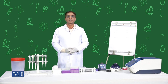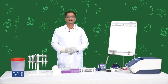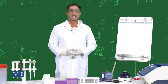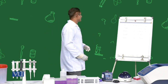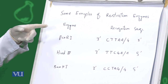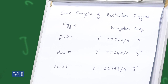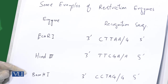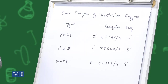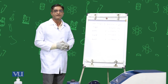We will discuss the principle of RFLP. There are certain enzymes called restriction enzymes which cut DNA molecules at different sites, called recognition sites. Most commonly used restriction enzymes and their recognition sites include EcoR1, which cuts at the sequence GAATTC, and HindIII, which cuts at AAGCTT. These recognition sites are where the enzymes recognize and cut the DNA, and this is the principle of RFLP.